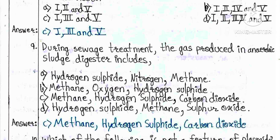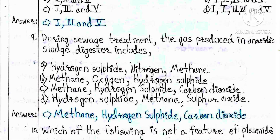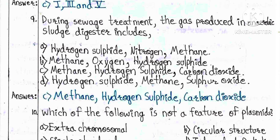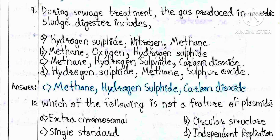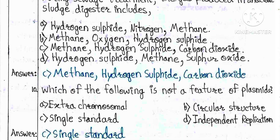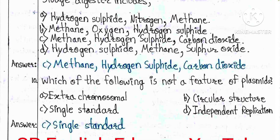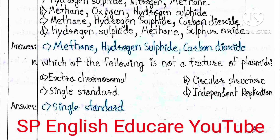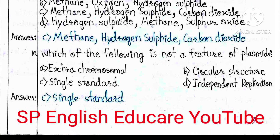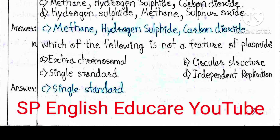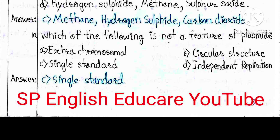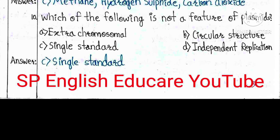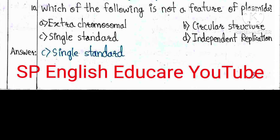Question 9: During sewage treatment, the gases produced in an anaerobic sludge digester include: A) Hydrogen sulfide, nitrogen, methane — B) Methane, oxygen, hydrogen sulfide — C) Methane, hydrogen sulfide, carbon dioxide. The answer is C — methane, hydrogen sulfide, and carbon dioxide.